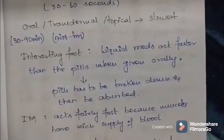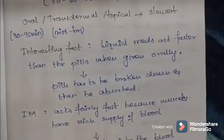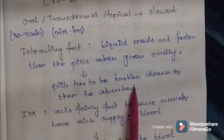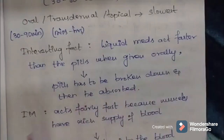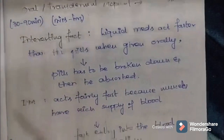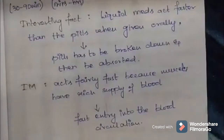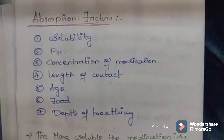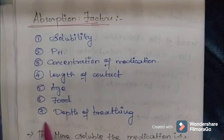One interesting fact is that liquid medications act faster than pills, because pills must be broken down before being absorbed, while liquid medications can directly enter the bloodstream. Intramuscularly given drugs act fairly fast because muscles have a rich blood supply.